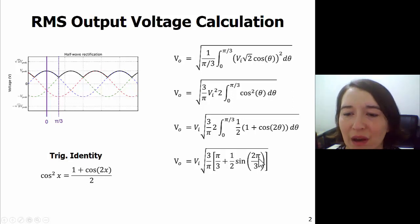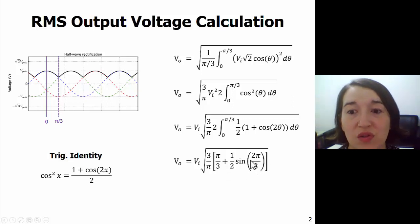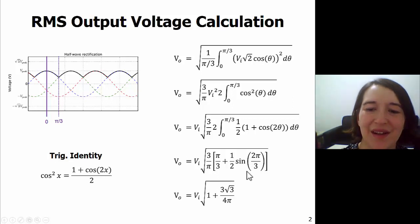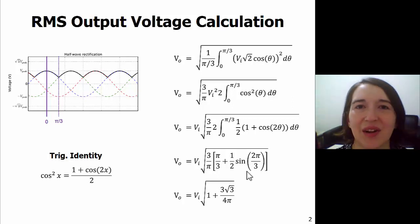And we're left with this expression which isn't too bad. We see this three over pi and pi over three that cancels out to be equal to just one, and then sine of two pi over three, square root three over two.